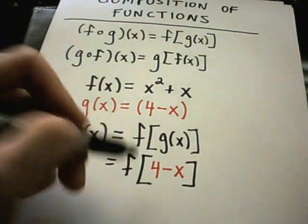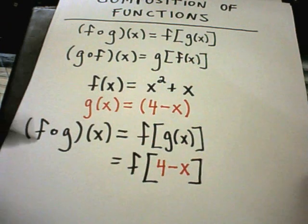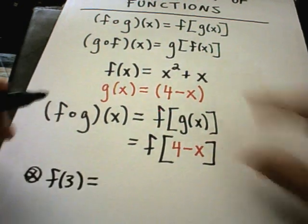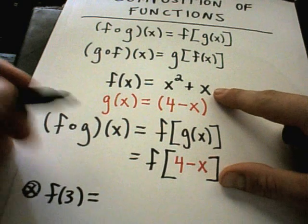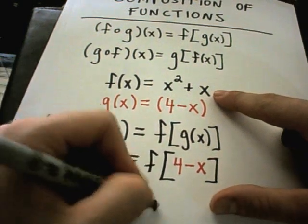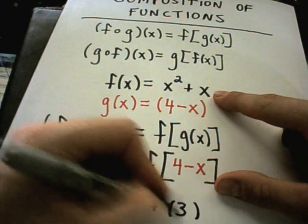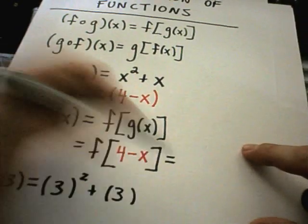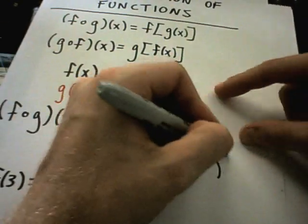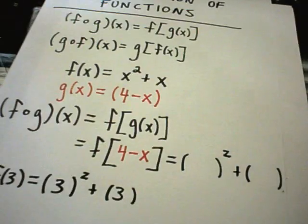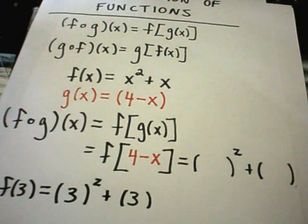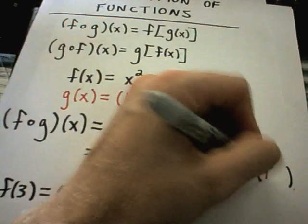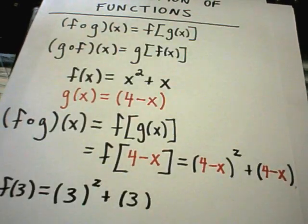If somebody said figure out f of 3, you would look back at your original f of x equation, and everywhere there was an x you would replace it with a 3. I'm going to do the same thing. I'm going to go back and everywhere there's an x, I have to put something in. But this time the thing that I'm substituting in is not just a simple number like 3. I have to substitute in the quantity 4 minus x.